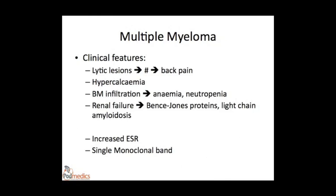Infections are common due to immune paresis, and renal failure is also a considerable problem. In the 30% of patients with myeloma who have Bence-Jones protein in their urine, these proteins tend to form solid casts in the distal nephrons, disrupting normal kidney function. Additionally, a subgroup of patients will develop light-chain amyloidosis, which can be deposited in the kidneys and lead to nephrotic syndrome with significant proteinuria.